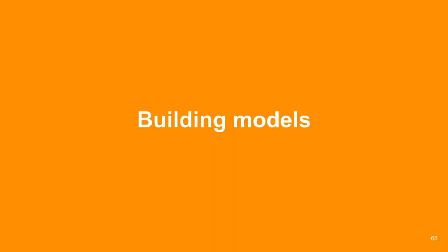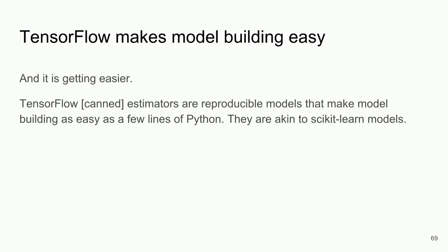TensorFlow is exceptional as a framework for neural networks, but it has a dramatically underutilized number of components that make model building easier. Canned estimators are reproducible models that make it as easy as scikit-learn models, where it's literally: random_forest = RF, rf.fit, rf.predict. Why don't we have that same ease of use in TensorFlow? We do — you just haven't been using it. That's what canned estimators are.